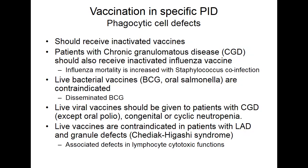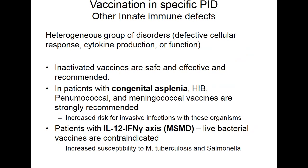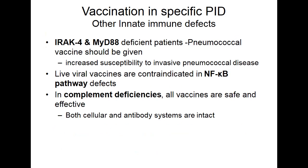There is a subset of phagocytic cell defects — such as Chediak-Higashi syndrome and leukocyte adhesion diseases — where, besides neutrophil defects, other leukocyte defects are also present. For other innate immune system disorders, which is a long list available on the IDF website, the same principles apply; these are relatively rare disorders.